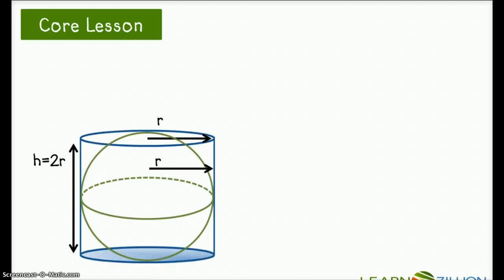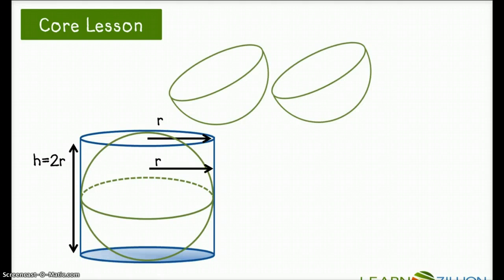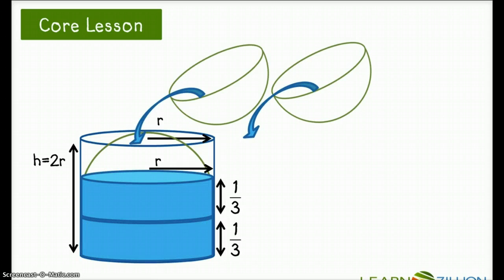Two hemispheres equal the sphere. If we pour two hemispheres of water into the cylinder of the same height and radius, it will fill the cylinder two-thirds. In other words, the volume of the sphere will be two-thirds of the volume of the cylinder.